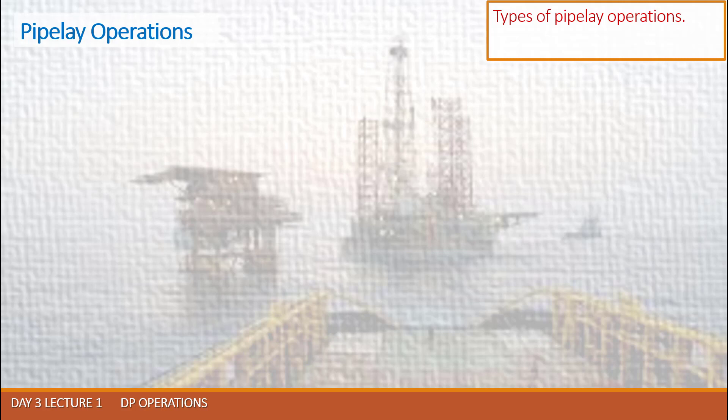Other methods include J-lay, which is used for deep water operations, and reel lay or drum lay, where the pipe is pre-constructed at a shore factory and reeled aboard the vessel. The pipe is constructed in a linear pipe fabrication facility called the firing line.